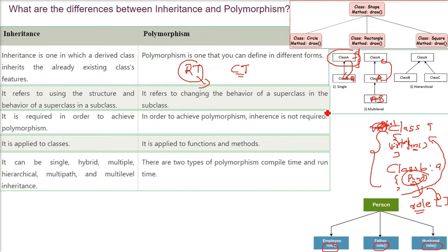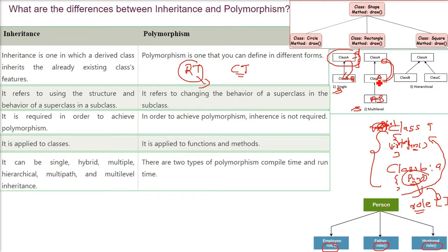Inheritance can be single, hybrid, multiple, hierarchical, and multi-level. There can be different types of inheritance. We have hierarchical inheritance as well.